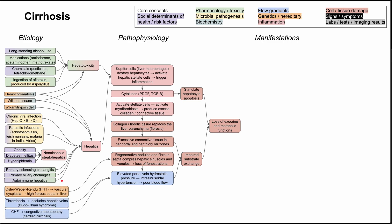The vascular causes of cirrhosis include Osler-Weber-Rendu, also known as hereditary hemorrhagic telangiectasia — a disease causing vascular dysplasia that can directly lead to high fibrous septa in the liver, compressing the hepatic sinusoids and disrupting liver architecture. When you have thrombosis in the hepatic veins, that's called Budd-Chiari syndrome, which directly affects pressures in the liver and leads to poor blood flow. Patients with congestive heart failure can also have congestive hepatopathy, or cardiac cirrhosis, where blood backs up from the heart into the liver.